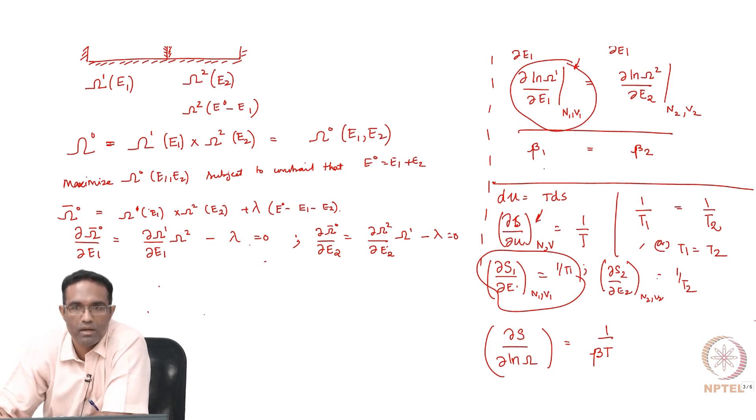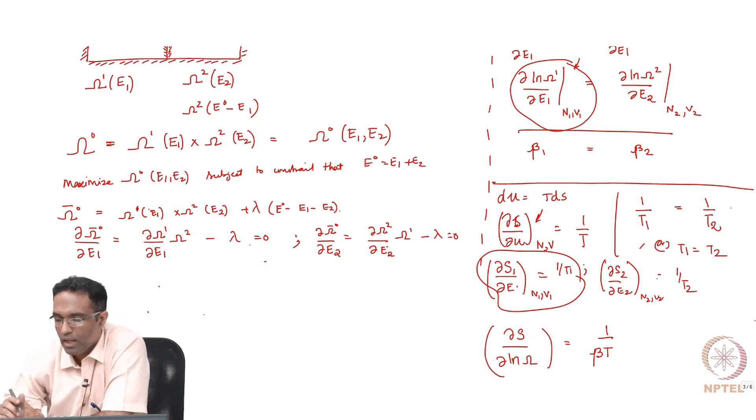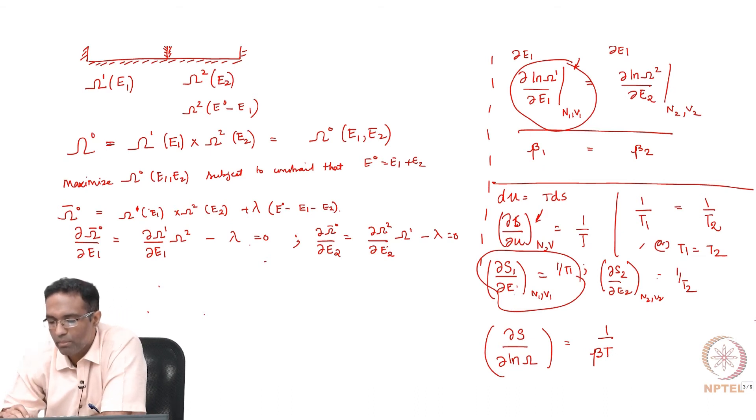This is equal to beta 1 or beta - dou omega by dou e is basically beta. If it belongs to system 1, then it is beta 1; if it belongs to system 2, then it is beta 2. Similarly, dou s 1 by dou e 1 is 1 by t 1. I am just removing the suffixes 1 here because it can be any arbitrary system as long as n and v are constant. So dou s by dou ln omega is 1 by beta t and this has to be a constant.